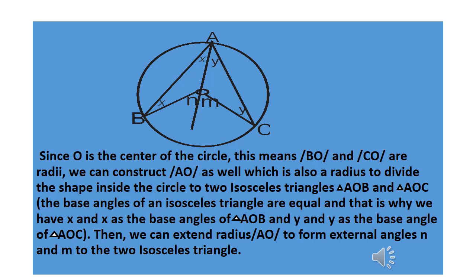If we extend radius AO outward, it forms exterior angles for both isosceles triangles. We have angle n as the exterior angle for isosceles triangle AOB, and angle m as the exterior angle for isosceles triangle AOC. From here we'll be able to prove the theorem.